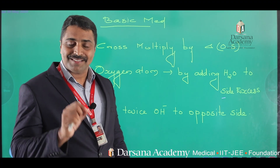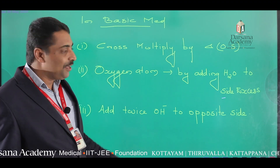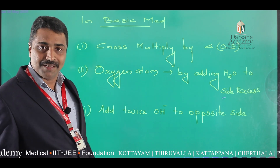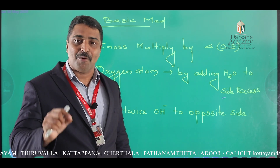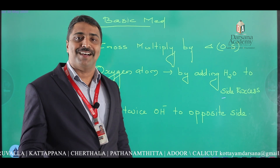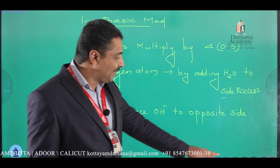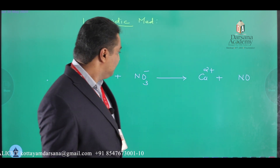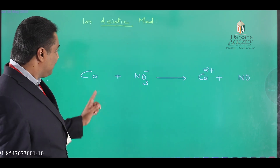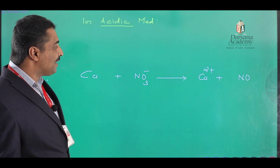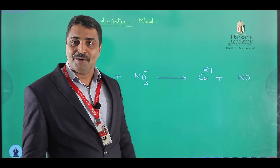We can solve two examples — one in acidic medium and another in basic medium — using this simple three-step method. The first step is common to both acidic and basic medium. The example in acidic medium is: copper reacts with nitrate ion to give cupric ion and nitric oxide.